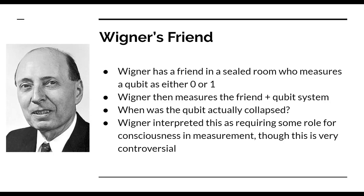This raises the question of what is actually happening — the friend isn't in cryostasis until Wigner measures him; the friend clearly feels they've already made this measurement. Wigner interpreted this to require some role for consciousness in measurement — that measurement is fundamentally tied to consciousness. But this is very controversial. It could also be that a measurement is really just entangling yourself to a system, which means you don't have to be conscious to measure something. Ultimately these questions are very nebulous. Even though we can describe quantum mechanics mathematically very well, this remains very problematic.